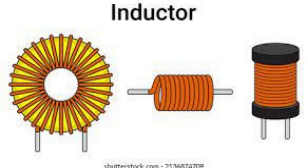The basic construction of an inductor is a coil of wire, typically wrapped around a core made of a magnetic material such as iron, ferrite, or powdered metal. The wire used in an inductor is usually made of copper, although other materials such as aluminum or silver can be used as well. The wire is typically wound around the core in a helical pattern, with the number of turns and the thickness of the wire affecting the inductor's characteristics.